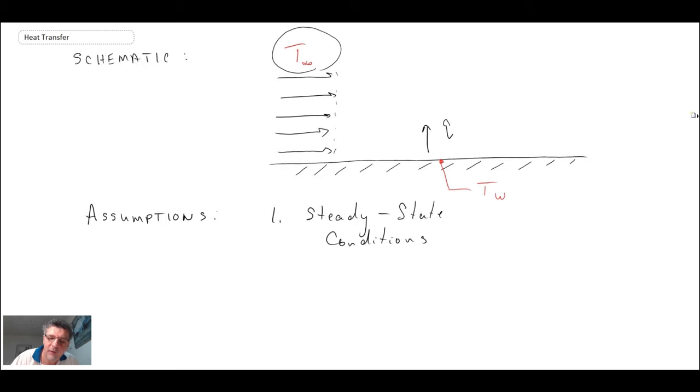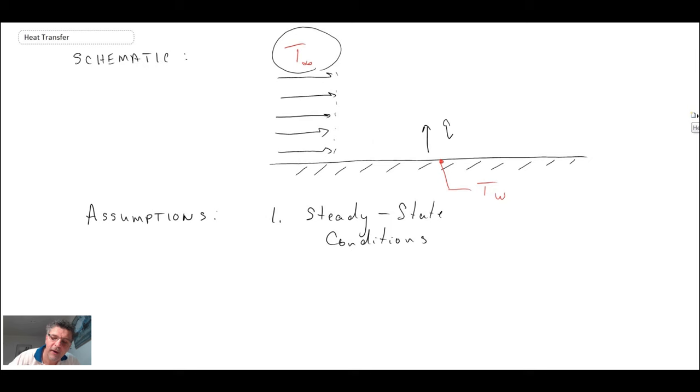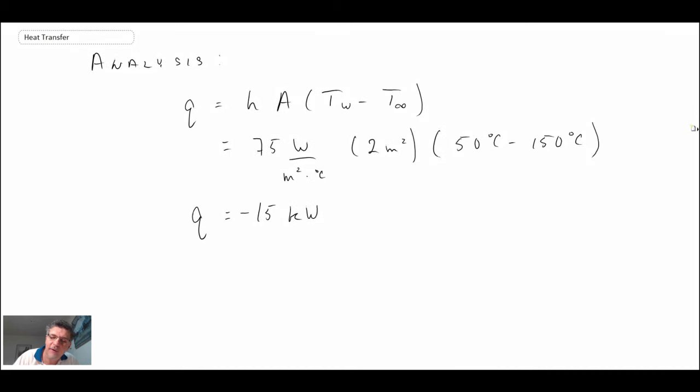And what we need to do is go back and look at the way that we had the drawing. We were showing the heat transfer going from the wall out into the fluid. But given that the fluid is at a hotter temperature, a higher temperature than the wall—the fluid is 150 versus the 50 of the wall—really what we have is a scenario where we have 15 kilowatts, and then just add the words into the plate.